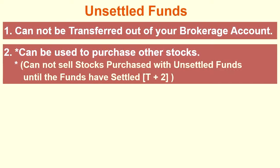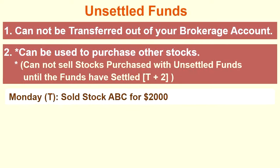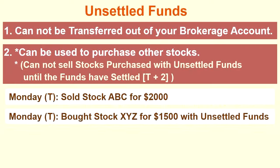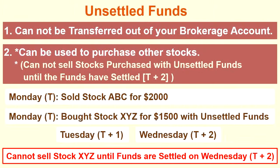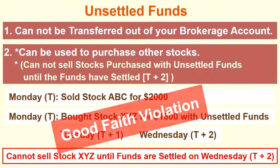For example, say on Monday you sold stock ABC for $2,000 — so Monday becomes T day. Then on Monday you bought stock XYZ for $1,500 using the unsettled funds from the sale of stock ABC. Tuesday will be T plus 1 and Wednesday will be T plus 2. You cannot sell stock XYZ until the funds settle on Wednesday, T plus 2. If you do try to sell stock XYZ before the funds are settled, you will be hit with what is called a good faith violation. A good faith violation occurs when you try to sell a stock that was purchased with unsettled funds before those funds become settled. Each brokerage firm handles good faith violations differently, so check with your brokerage firm to see how they handle them.